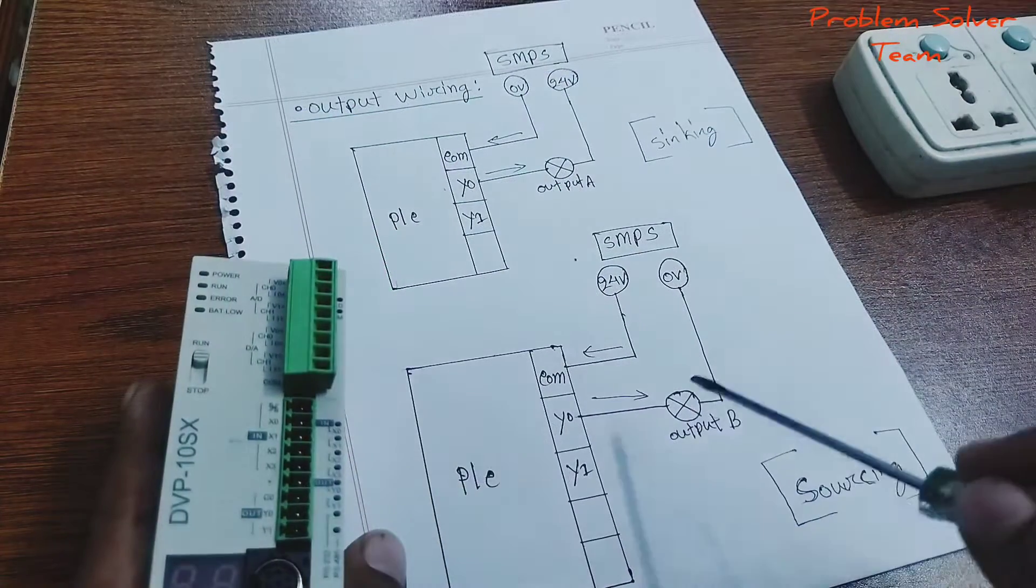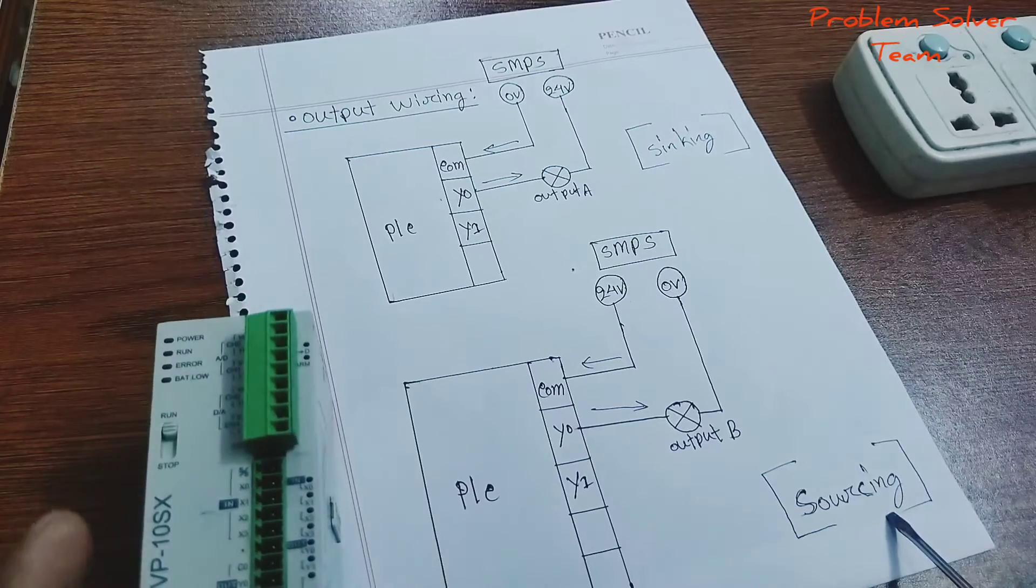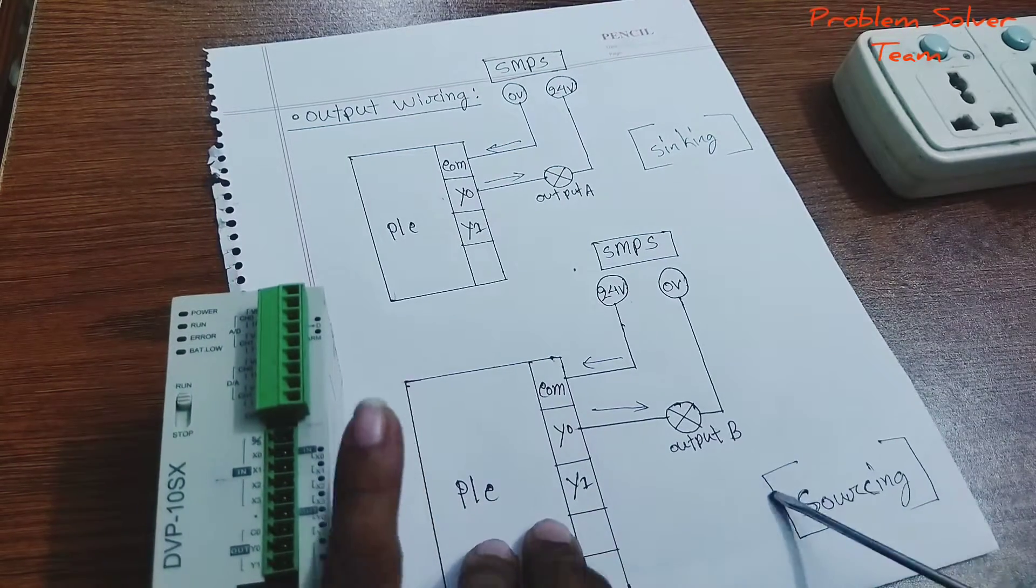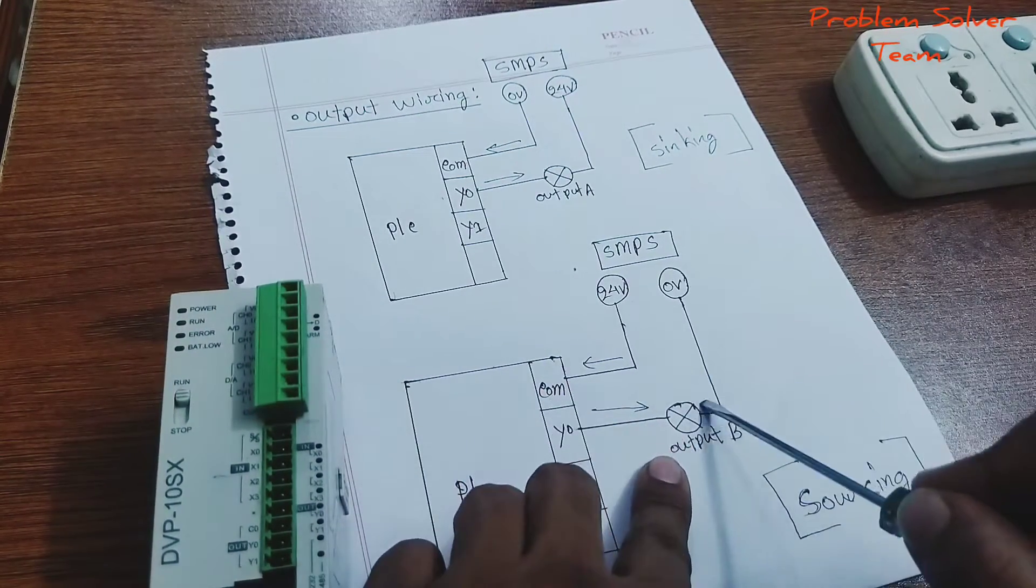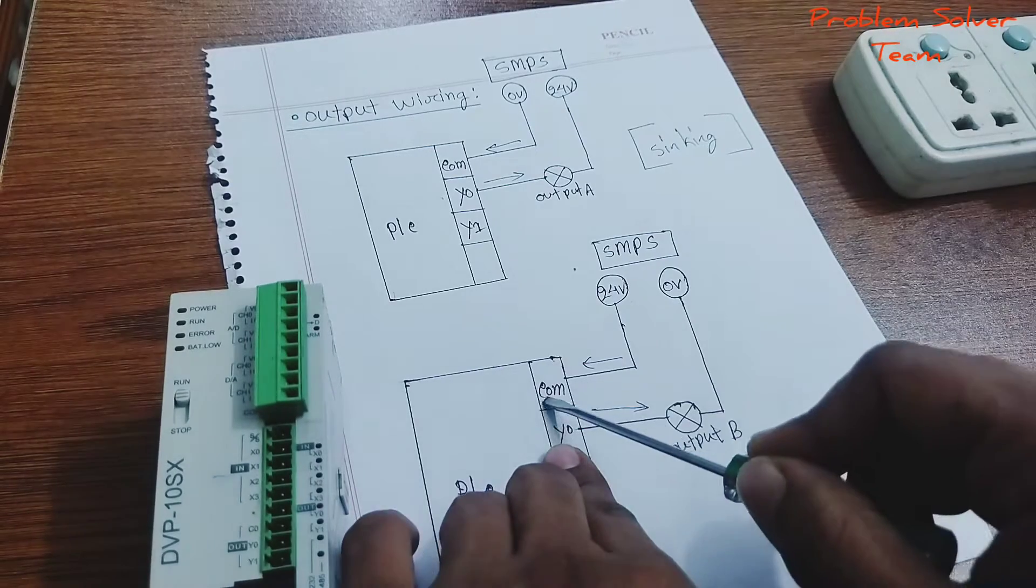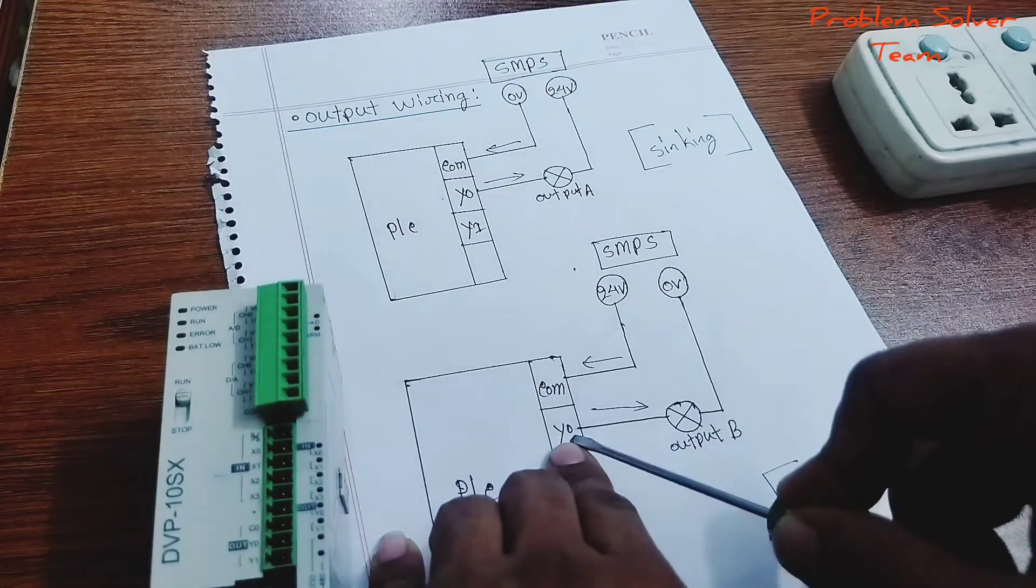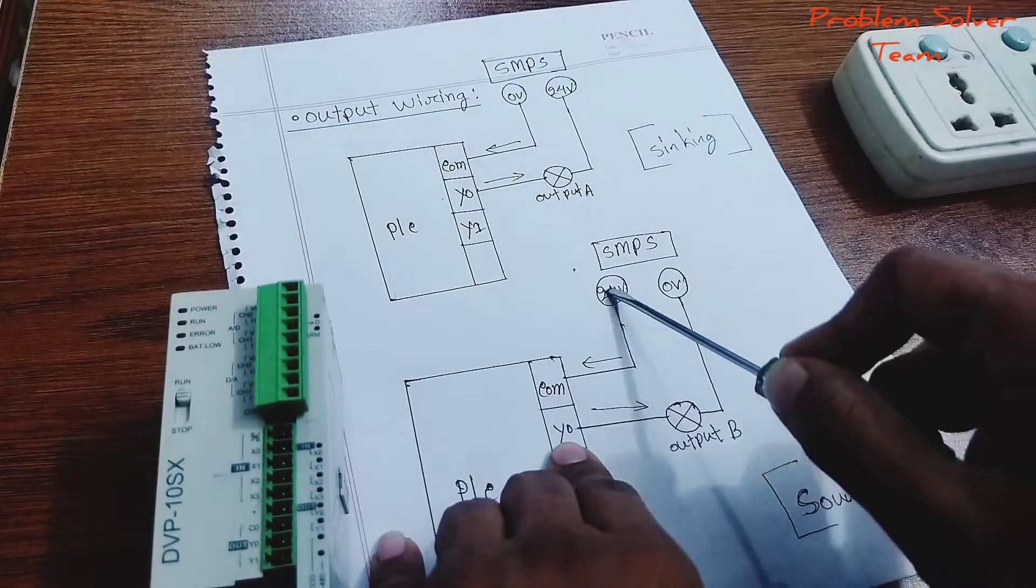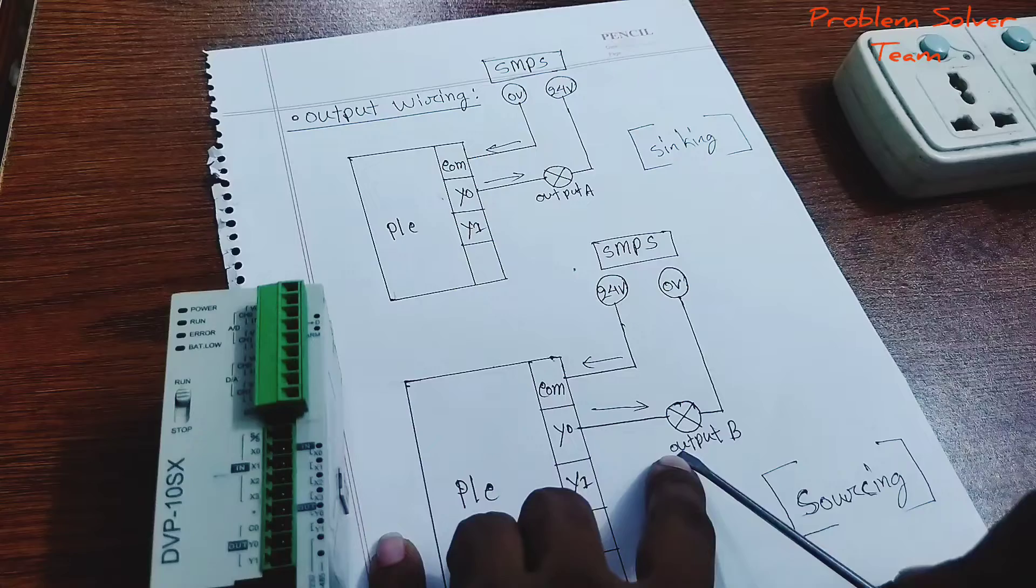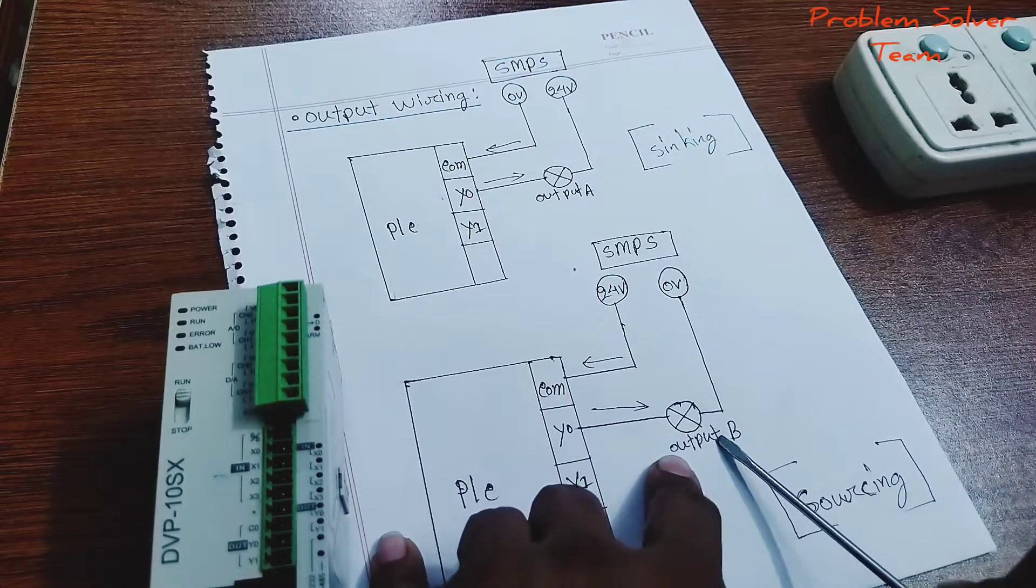This PLC output circuit is sourcing. If you think about the opposite side, output B has current flow through Y0 to the common pin at 24V and 0V to output B section. Y0 and common pin to 24V, this output B section is sinking and PLC output section is sourcing.